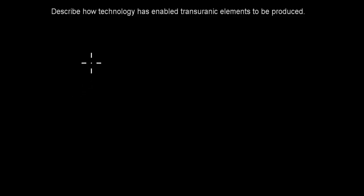Welcome to one of the past H2 Chemistry exam questions for the Nuclear Chemistry chapter. In this video, we're going to cover this question, which is: Describe how technology has enabled transuranic elements to be produced. I'll give you five seconds to pause the video. Once you've paused the video, try to attempt that question, and I'll cover the actual answer once you've done it.